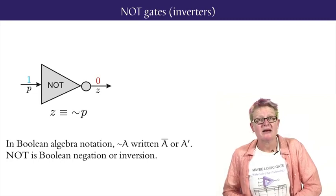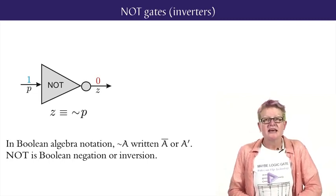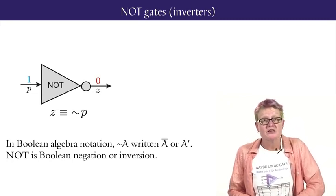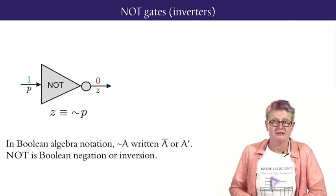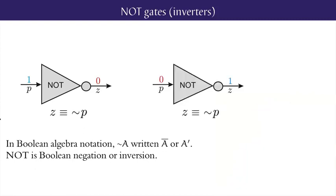Even simpler among the basic gates is the NOT gate or inverter system. It is a one-input, one-output system with the property that the output is always the Boolean negation of the input. Input one results in output zero and input zero results in output one. The standard symbol for a NOT gate is a triangle followed by the inversion bubble.